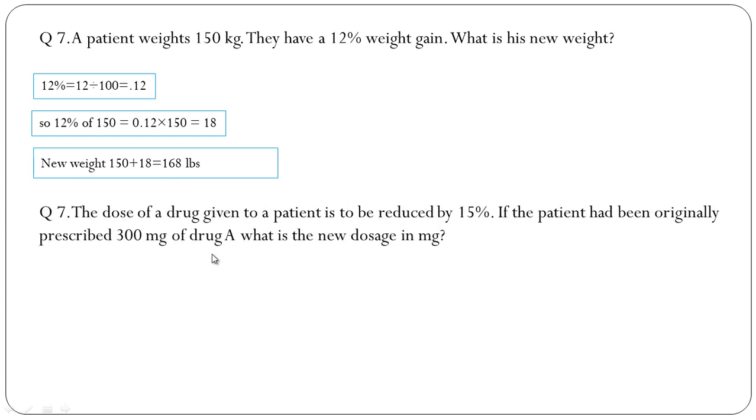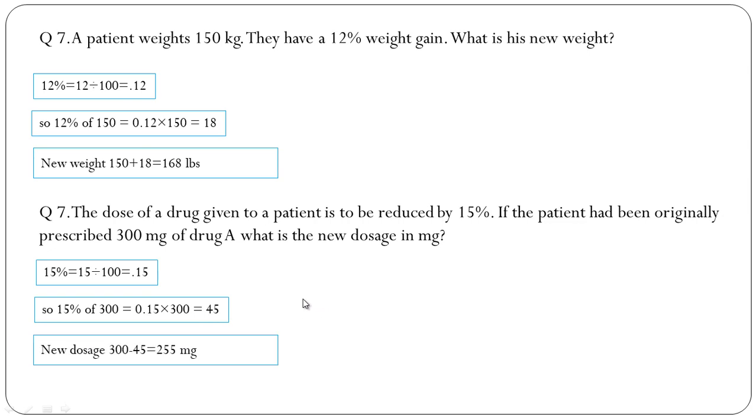Question number 8: The dose of drug given to a patient is to be reduced by 15 percent. If the patient had been originally prescribed 300 mg of drug, what is the new dose in mg? 15 percent means 0.15, so 15 percent of 300 equals 0.15 multiplied by 300, that will be 45. New dose will be 300 minus 45, that is 255 mg.